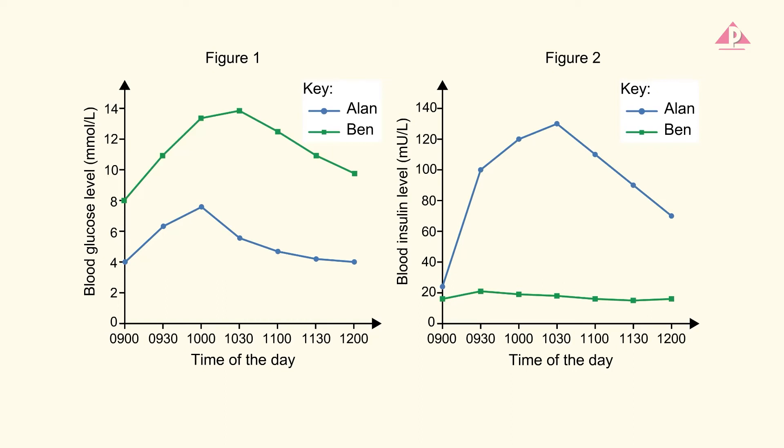We will demonstrate how to deduce the type of diabetes Ben has. Some students may focus only on figure 2 and miss the information in figure 1 upon seeing questions asking about the types of diabetes. Note that figure 1 shows that Ben's blood glucose level was higher than Alan's and increased faster.